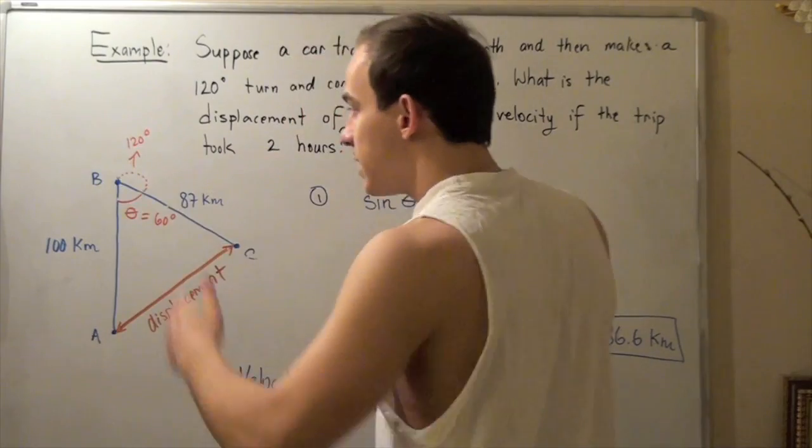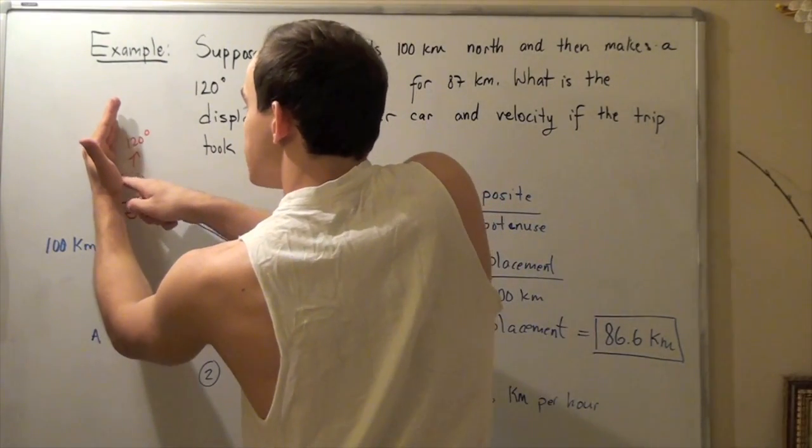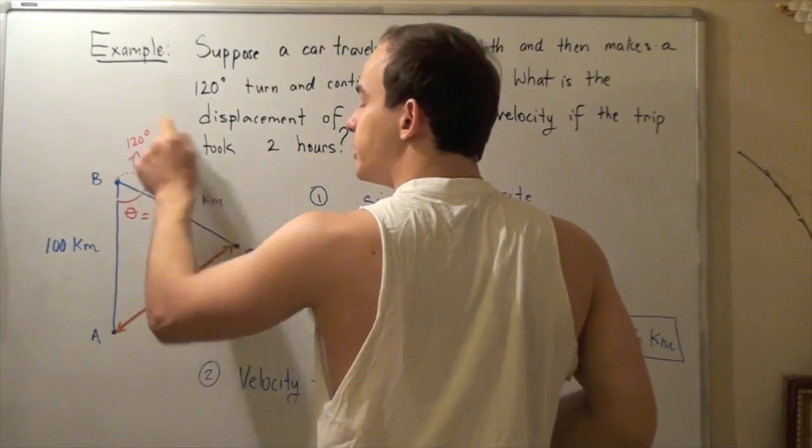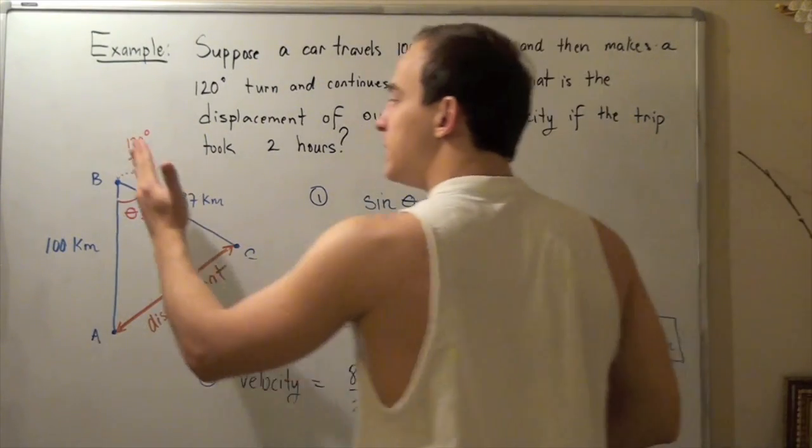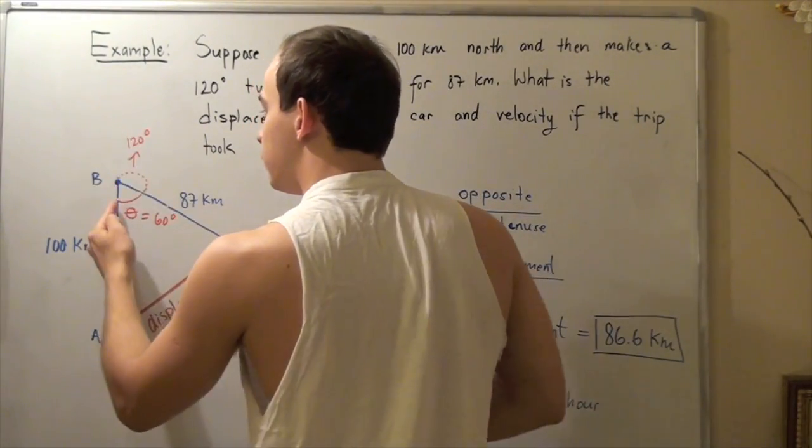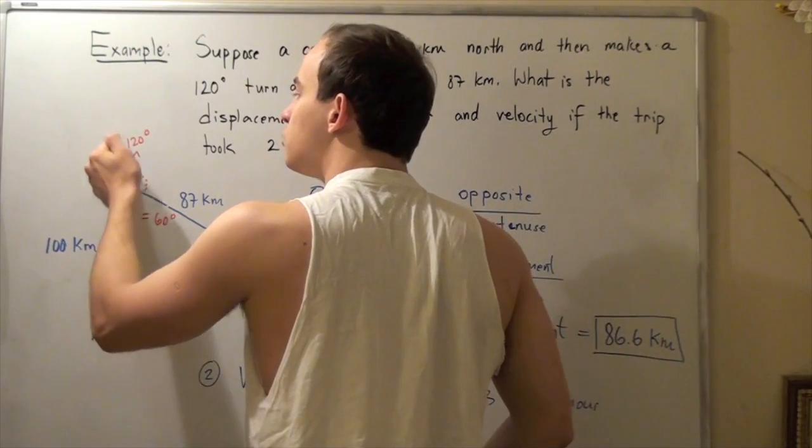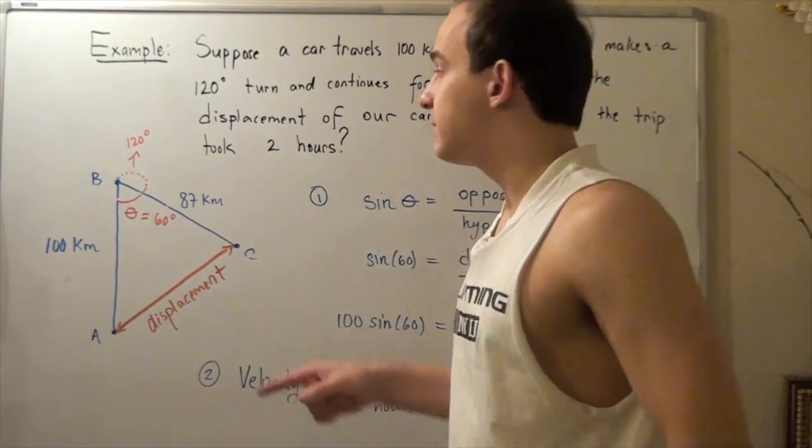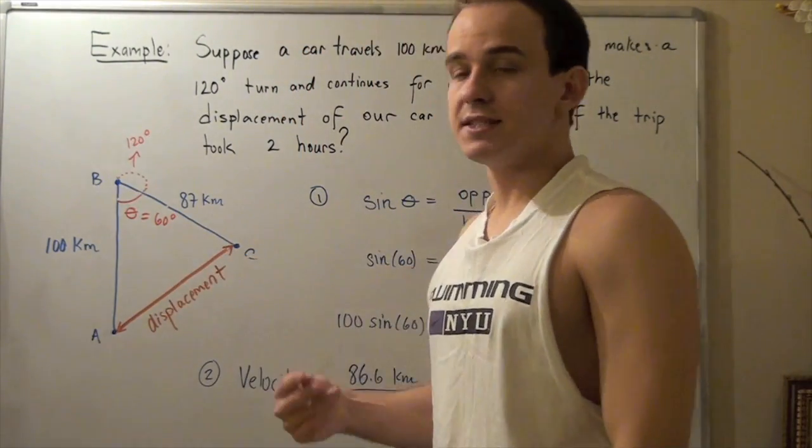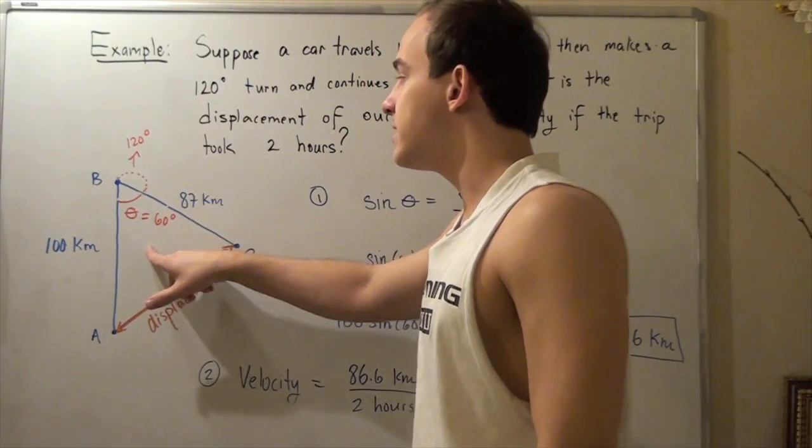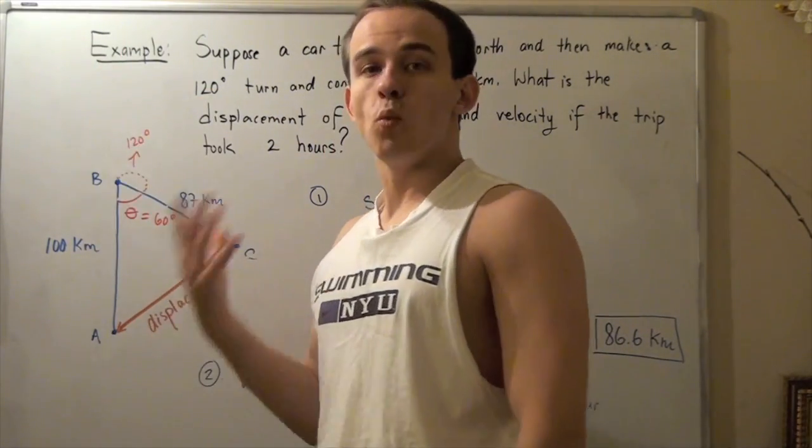This obtuse angle is 120 degrees. Note that if we extend the line outward, it will be 180 degrees and that means this angle must be 60 because 120 plus 60, a straight line, is 180.